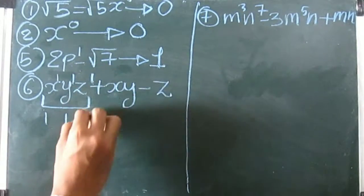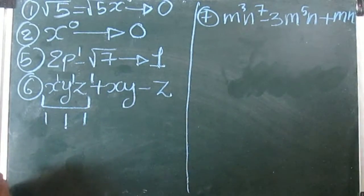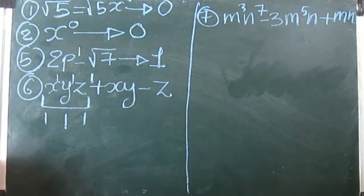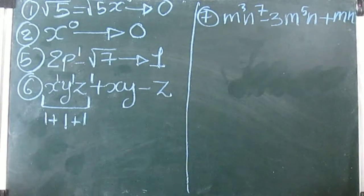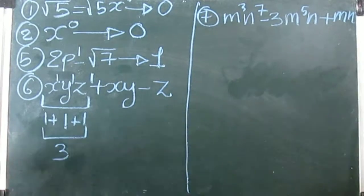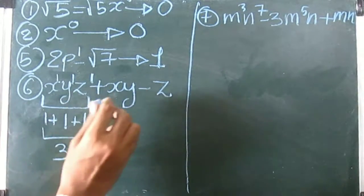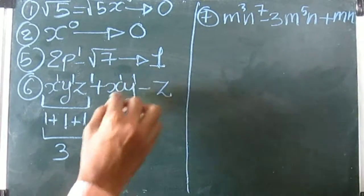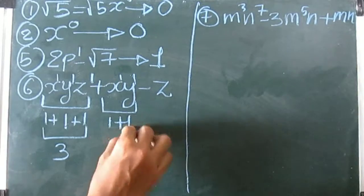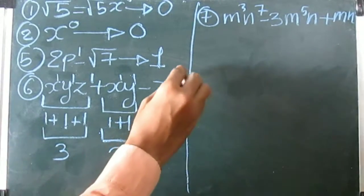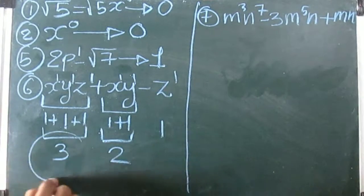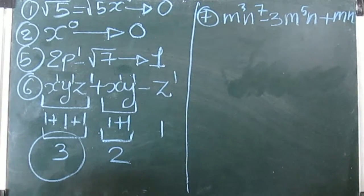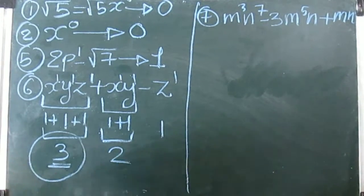z also has a power of one. So in this term, each variable has power one and they are in multiplication, so the powers get added. The power of the first term is three. The second term is x raised to one times y raised to one, so its power is one plus one equals two. The last term has power one. The highest among these is three, so the degree of this polynomial is three.